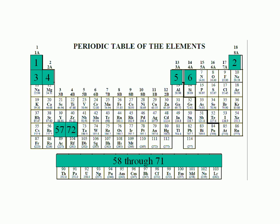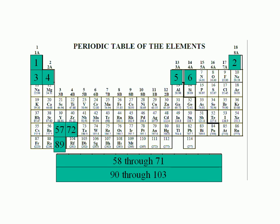On some periodic tables, lanthanum is shown with the lanthanides, and lutetium — number 71 — is shown in its place. There's another break once you get to actinium, which has an atomic number of 89. Elements 90 through 103 are typically shown below the lanthanides; these are called the actinides. The numbering then resumes with rutherfordium. On some periodic tables, actinium is shown below the actinides, and lutetium — number 103 — is shown in its place.